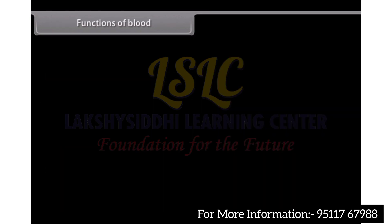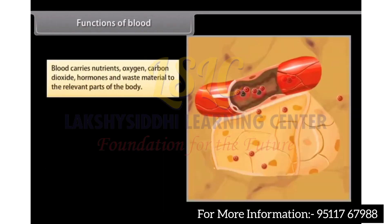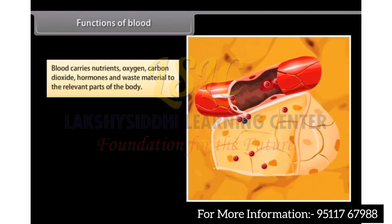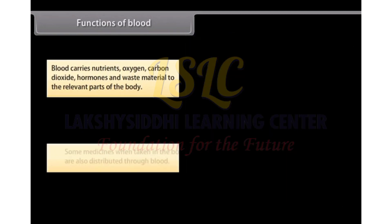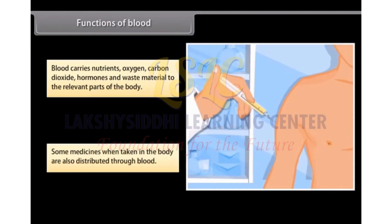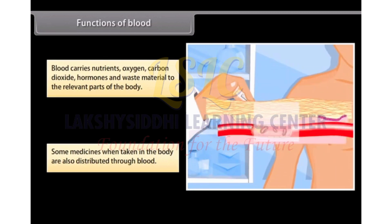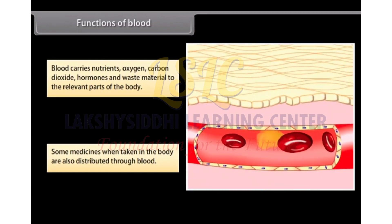Blood carries nutrients, oxygen, carbon dioxide, hormones and waste material to the relevant parts of the body. Some medicines when taken in the body are also distributed through blood.